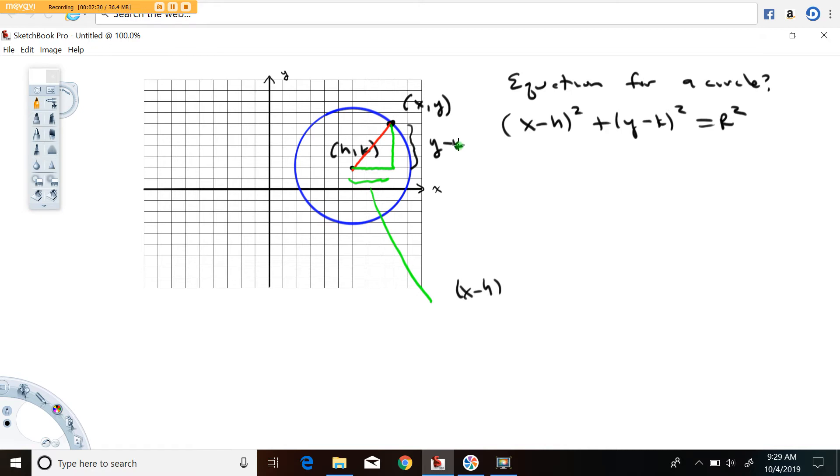And when you apply Pythagorean theorem, you then get (x minus h), that's this horizontal distance, squared, plus (y minus k), there's our other leg, squared, is equal to this distance in red. Which is what's called the radius of the circle. The distance from the center to any point on the circle is referred to as the radius. So that's what that value is there.